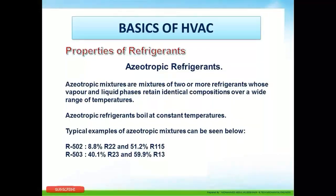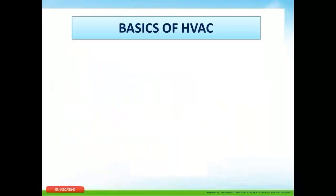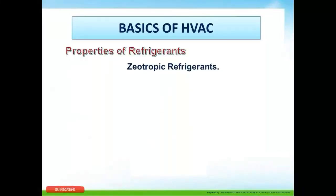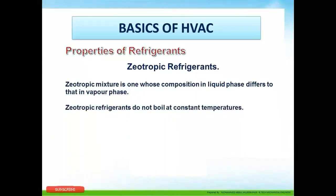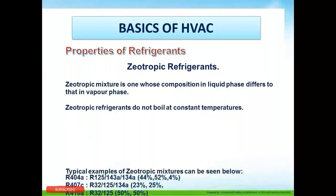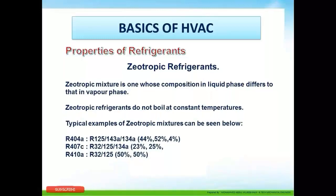R502 and R503 are mixtures of two independent refrigerants: R22 and R115, and R23 and R13. A zeotropic refrigerant is one whose composition in the liquid phase differs from that in the vapor phase. Zeotropic refrigerants do not boil at a constant temperature. Typical examples of zeotropic mixtures include R404A, R407C, and R410A.